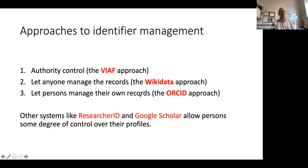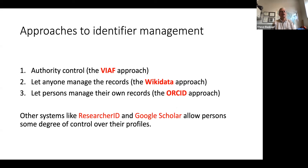There are a number of different approaches people use to manage identifiers. The first, which you could call authority control, is where just any person cannot fix problems where two names are being conflated. The polar opposite is the Wikidata approach, where anybody can change things — but then you have problems of potential vandalism. The third approach, which is what ORCID uses, is to let people manage their own records. It's not locked up from you, but also not just anybody can manage the record — it's something you control for yourself.